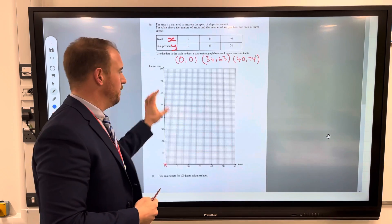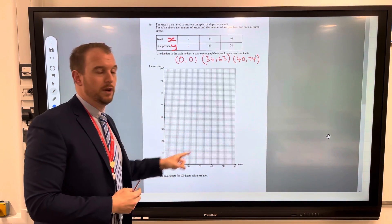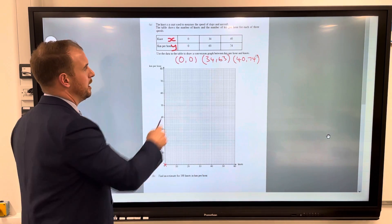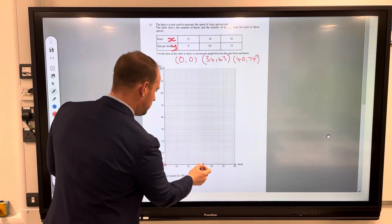So look at each little square and work out how much it's worth. I've got a nice easy question here because they're going up in ones on each of the axes. Be careful with the ones that you will be doing as well. 34 knots then, which is across here.